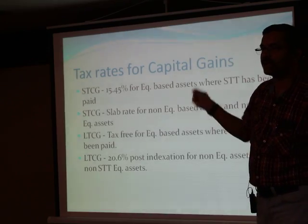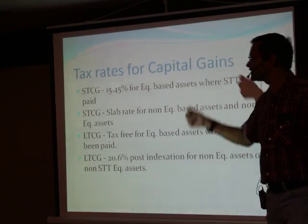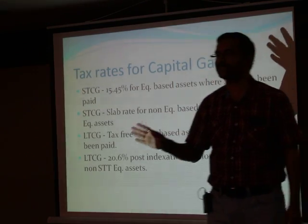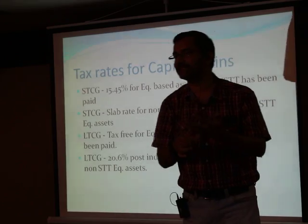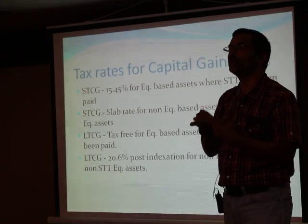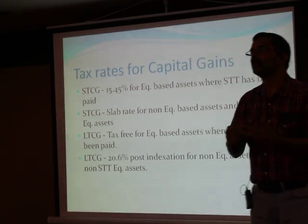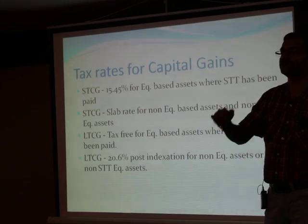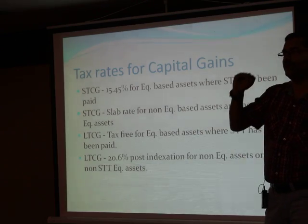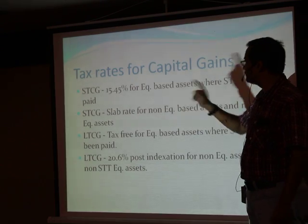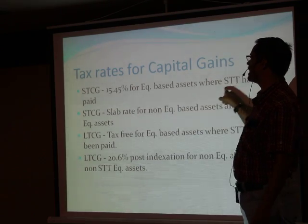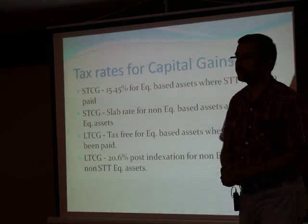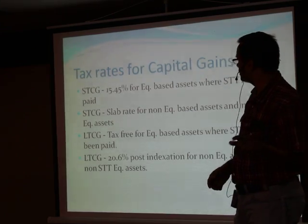AMC is not going to pay your tax. This 15.45% is irrespective of your tax slab. You may be in the 10% tax slab, you may be in 20%, you may be in 30%, but the short-term capital gain tax on equity and equity mutual fund assets when STT is applied is 15.45%.